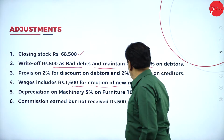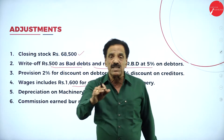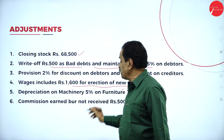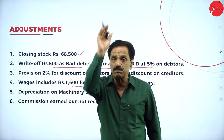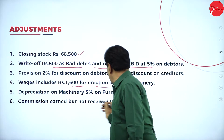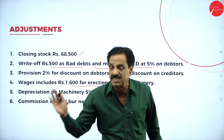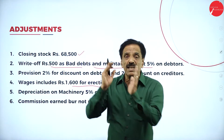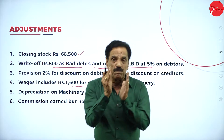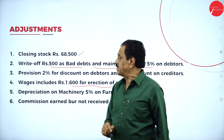Depreciation on machinery is 5% and on furniture 10%. The value of machinery has come down by 5%. Commission earned but not received — it is earned but not received, so it goes in the P&L account on the credit side and on the assets side of the balance sheet.